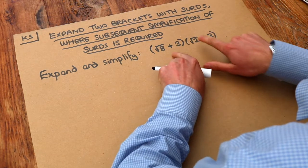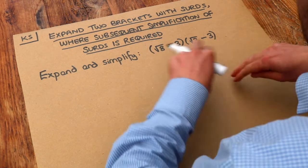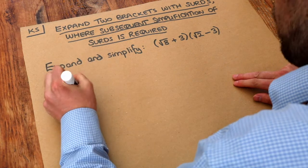Now we saw in a previous video how to multiply out two brackets with surds. The difference here is that we're going to have to simplify some surds after. So let's do what we did before.